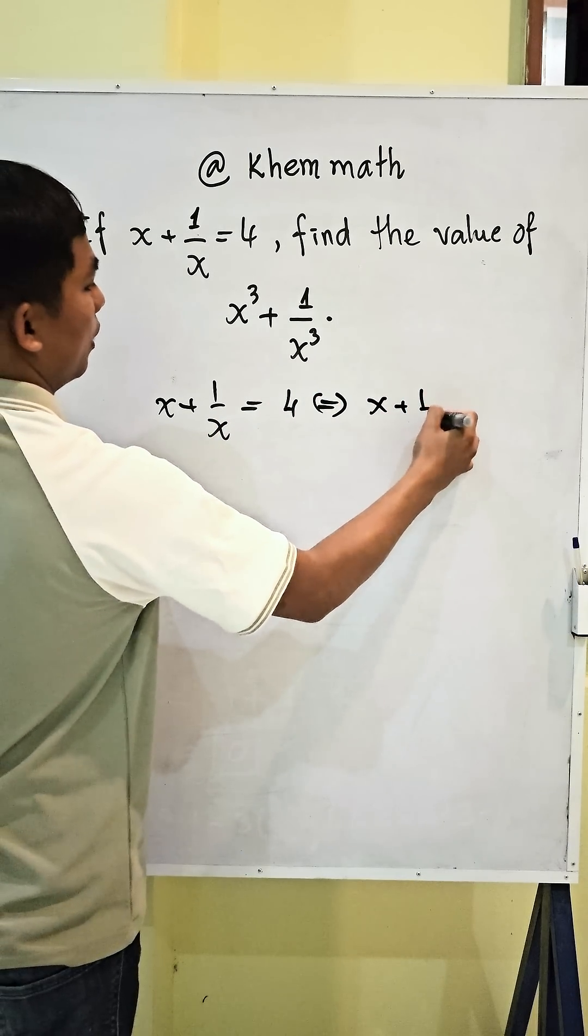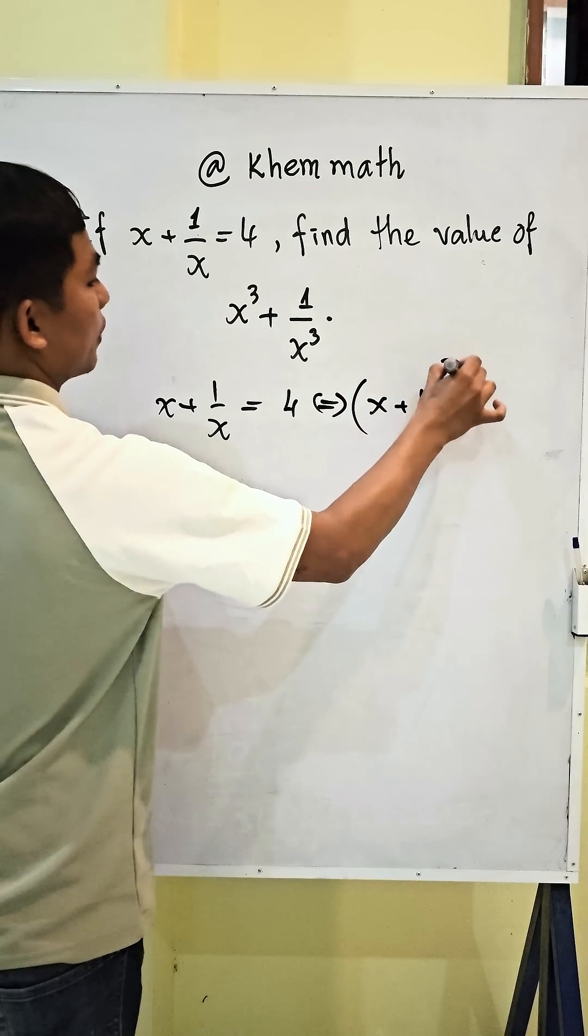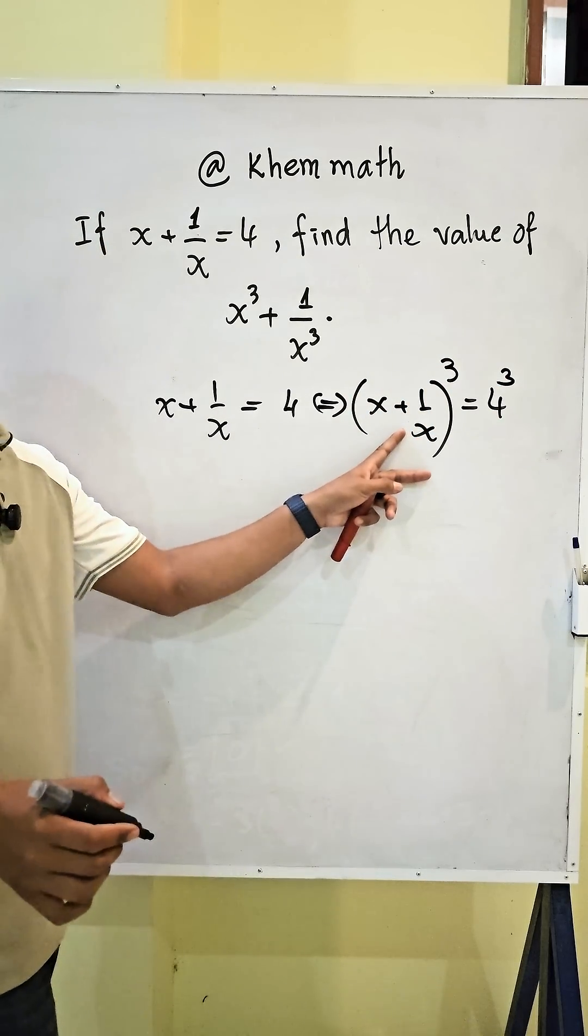So we're going to use x plus 1 divided by x, all power 3 equals 4 power 3. And here we explain this.